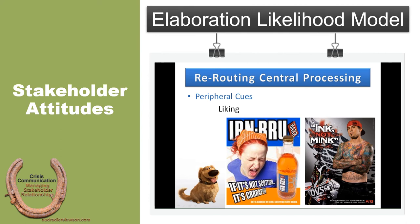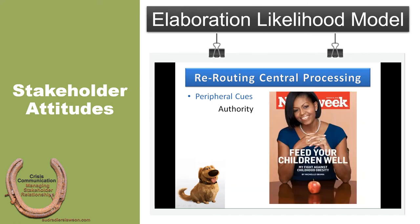You can also use authority as a peripheral cue — something uniquely distinct from liking. Finding someone we respect to tell us to engage in a particular behavior. That's why we often see respected figures like the First Lady speaking about particular social issues, being advocates, and engaging in action. These are the people we're trying to get viewers to follow. The appeal to authority can be a route back to central processing.